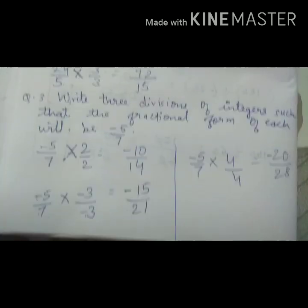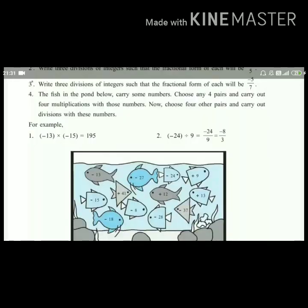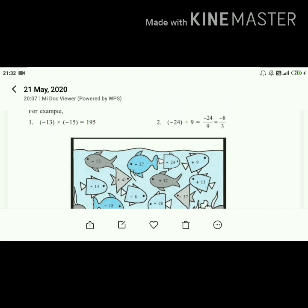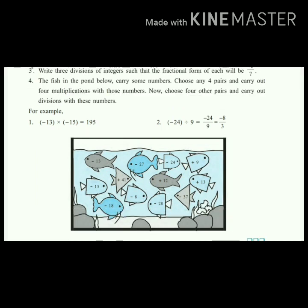Now for last question, question number 4, let me show you textbook. Now question number 4. See, this is question number 4. The fish in the pond below carries some numbers. You all can see picture below. There is a fish tank and fishes in it. And there are different numbers written on those fishes. Choose any 4 pairs and carry out 4 multiplication with those numbers. Now choose 4 other pairs and carry out division with these numbers. Now what we have to do here basically is among these fishes, we have to select 2-2 numbers. Like for example, here first one, minus 13 multiplied by minus 15 gives positive 195.